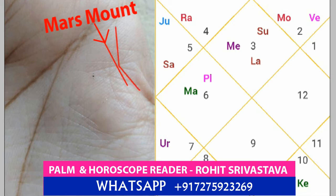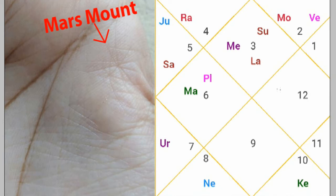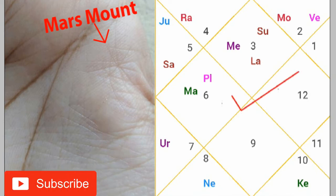Now we will give you real examples on the basis of horoscope. We will show you two horoscopes where the person has a star sign on their Mars mount. Let's start with the first horoscope.